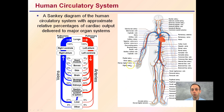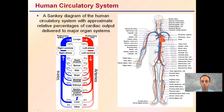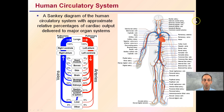The human circulatory system is quite complex, with a lot of arteries and veins going through. This diagram gives you an idea of the percentage of blood and where it goes.